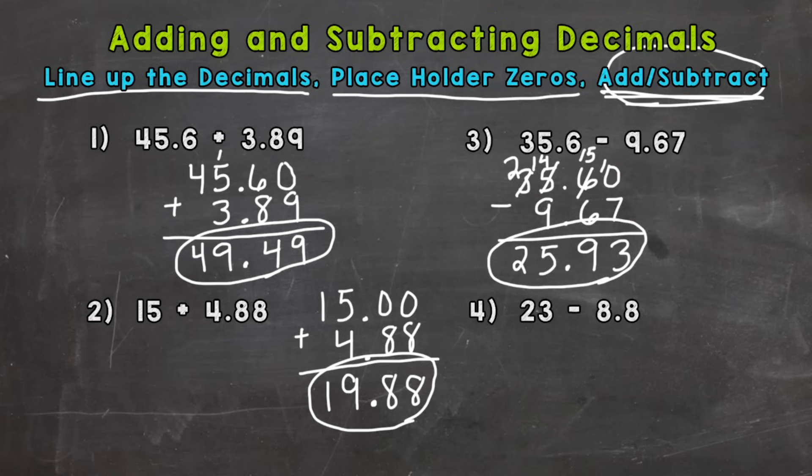Line up the decimals, use placeholder zeros, add or subtract. So just like number 2 here, we have a whole number in number 4, so the 23, and we put the decimal right after. Then we have 8 and 8 tenths, and subtract.